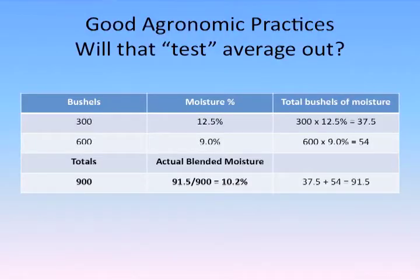Everybody's done that test — 300 bushels at 12.5% moisture, wait a few days, and then it's 900 bushels at 9% moisture. What does that average out to? Here's a formula: take your bushels multiplied by the moisture percentage to get your actual bushels of water in those loads. Do that for both the wet and dry portions, then divide total bushels of moisture by total bushels in the sample. That gives you your average — in this case, just over 10.2%. Knowing your bin records tells you where hot spots might be. It's important to know how to average out the moisture of grain going into the bin.